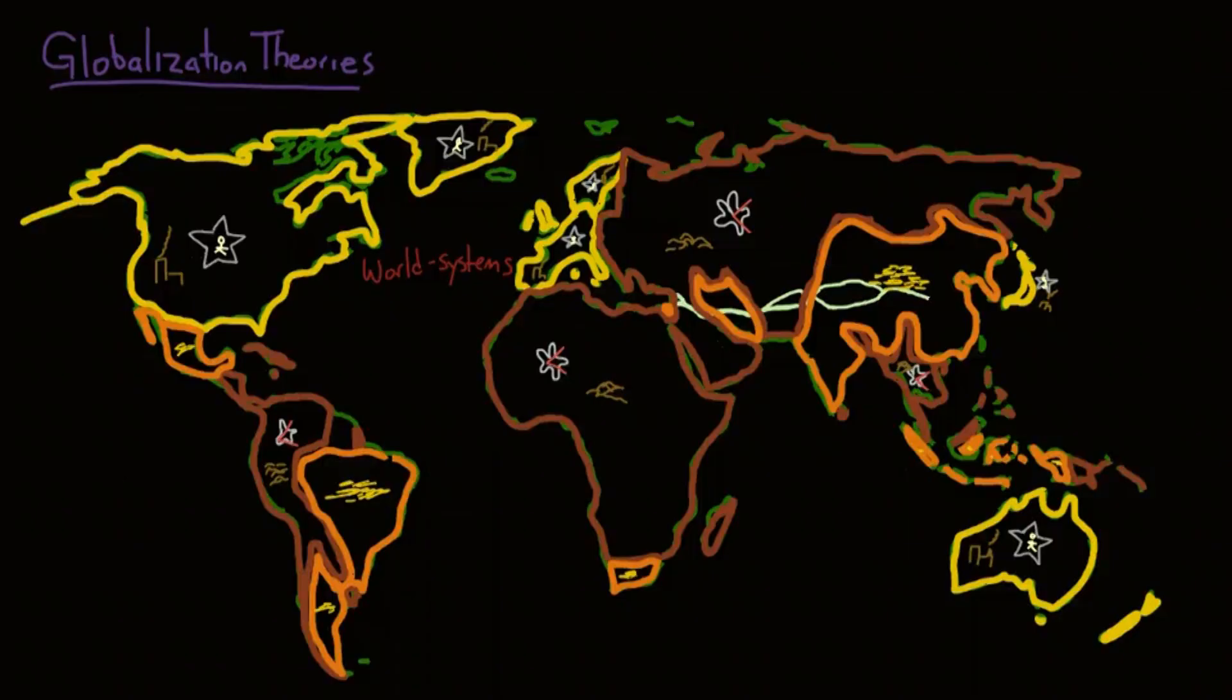The world systems theory is a fluid model, but it is criticized for being too focused on the economy and the core countries, and forgetting about culture or even the class struggles of individual countries.